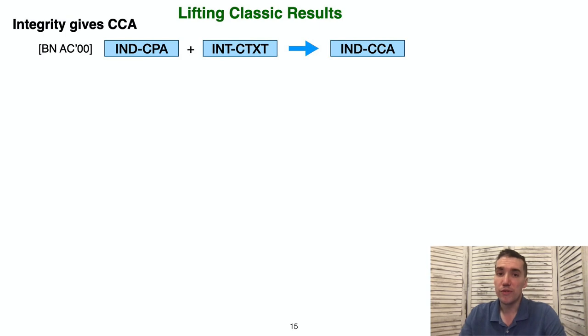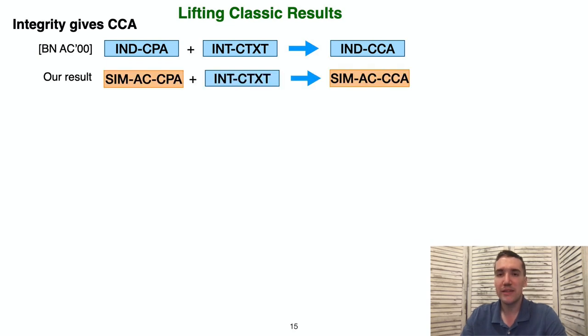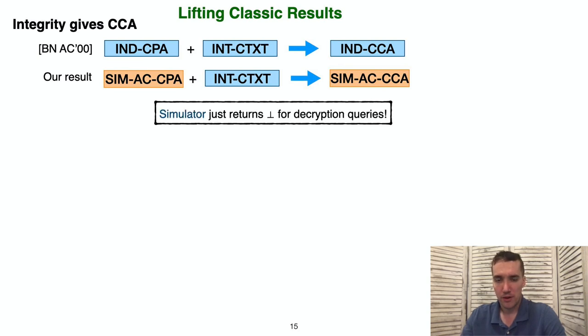To move towards proving that symmetric encryption schemes meet our new notions, let's first discuss how we lifted modular results for achieving CCA security to work with our new definition. Bellare and Namprempre showed that IND-CPA security plus integrity of ciphertexts implies IND-CCA security. We obtained the analogous result with our new versions of CPA and CCA security. To prove this result, all we needed to do was observe that the integrity of ciphertexts means our simulator can respond to decryption queries simply by rejecting all ciphertexts.